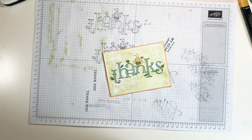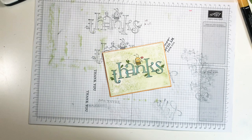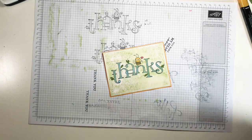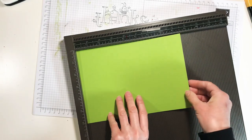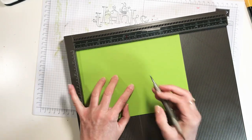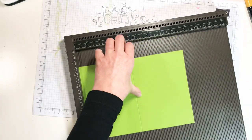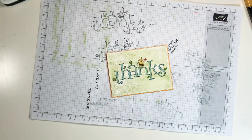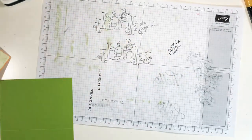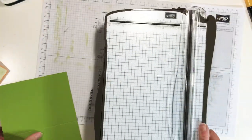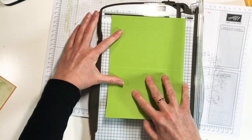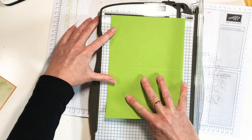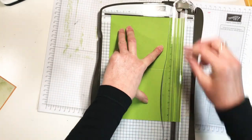And then I have a piece of Granny Apple Green. That needs a score. So I'm going to score it. And I think that piece is too big. So I'm going to grab my trimmer really quick and make sure that we have it the right size. Ah, look at that. That's my scoring blade.